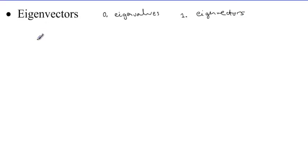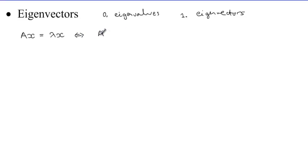Now let's recall a bit. We said a vector is an eigenvector if it's transformed by a transformation — which in this case is a matrix — applied to a column vector x, we get a lambda multiple of the vector. Then equivalently, this could be taken to the form A minus lambda times the identity matrix applied to x, giving us the zero vector.